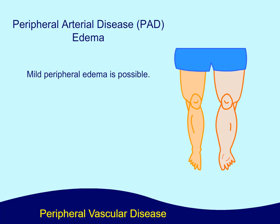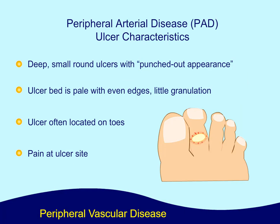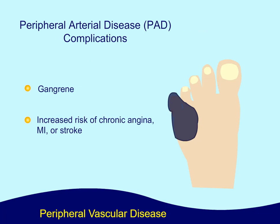Edema. A mild peripheral edema is possible. Ulcer characteristics include deep, small round ulcers with a punched-out appearance. The ulcer bed is pale with even edges and little granulation. The ulcer is often located on the toes, and there is often pain at the ulcer site. Complications include gangrene and an increased risk of chronic angina, MI, or stroke.